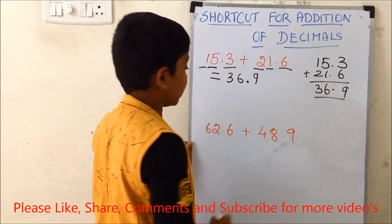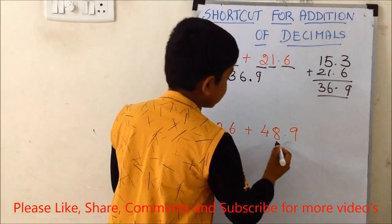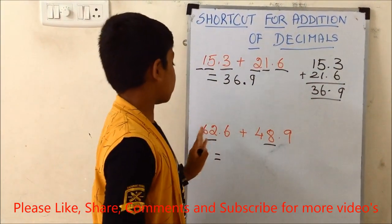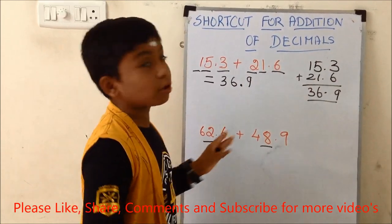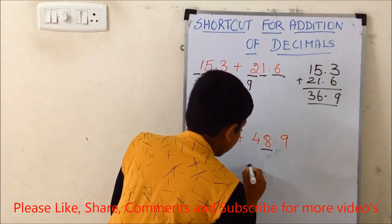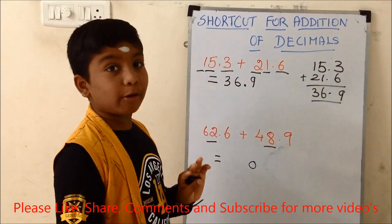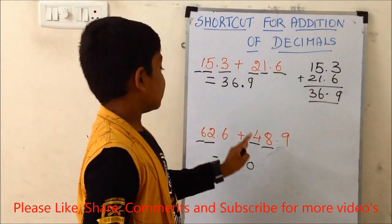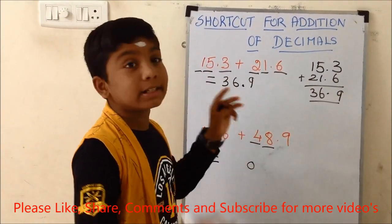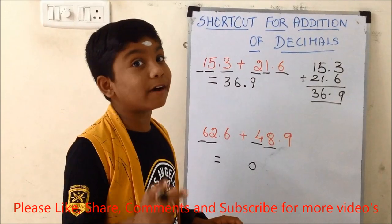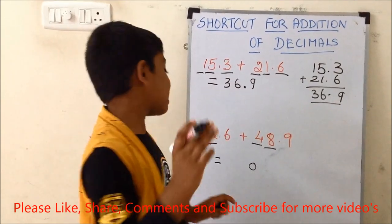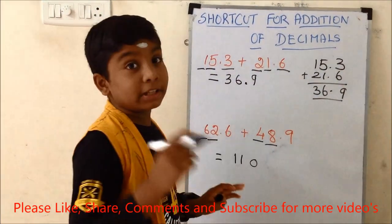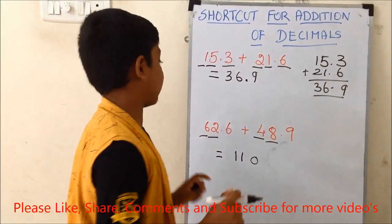As I said, first we need to add the ones digits — 8 and 2. 8 plus 2 is 10. Write 0 and keep the carry over in mind. Then the tens digits: 6 plus 4 is 10, and we have 1 carry over. 10 plus 1 is 11. Write 11 here.